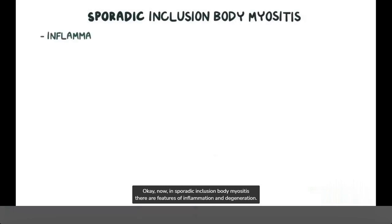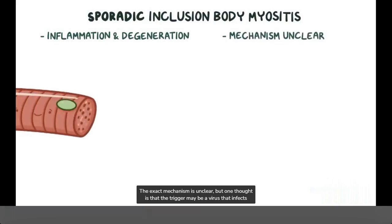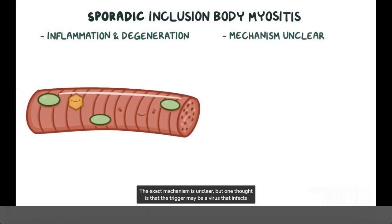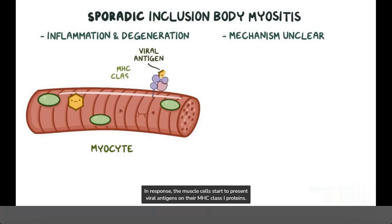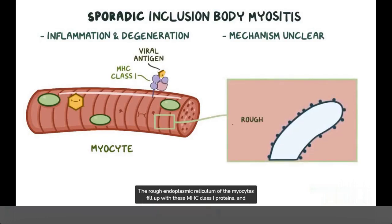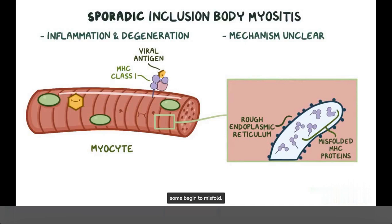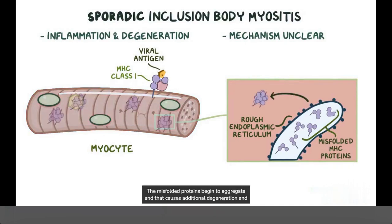Now in sporadic inclusion body myositis, there are features of inflammation and degeneration. The exact mechanism is unclear, but one thought is that the trigger may be a virus that infects and damages myocytes. In response, the muscle cells start to present viral antigens on their MHC class 1 proteins. The rough endoplasmic reticulum of the myocytes fills up with these MHC class 1 proteins, and some begin to misfold. The misfolded proteins begin to aggregate, and that causes additional degeneration and destruction of muscle fibers.